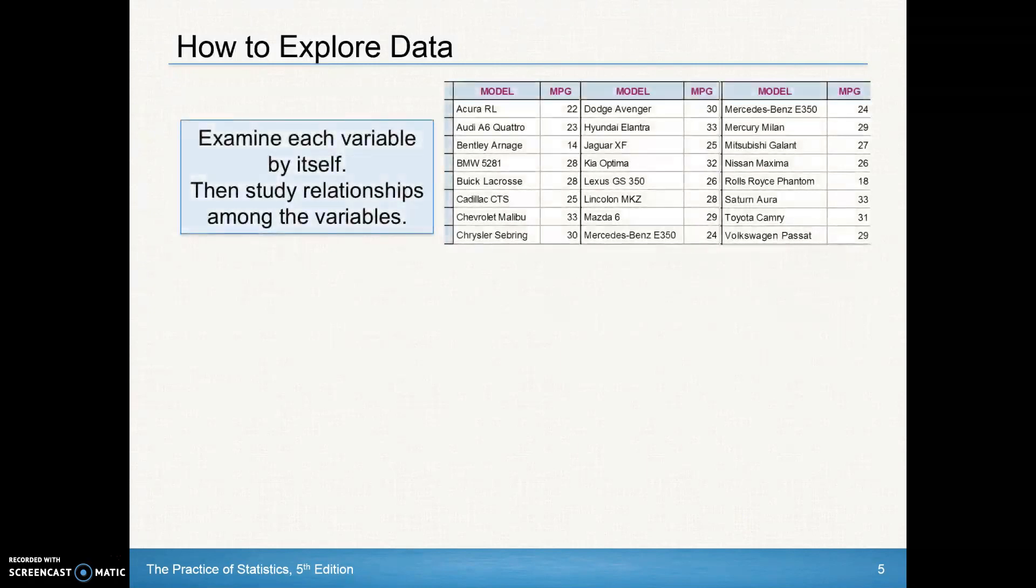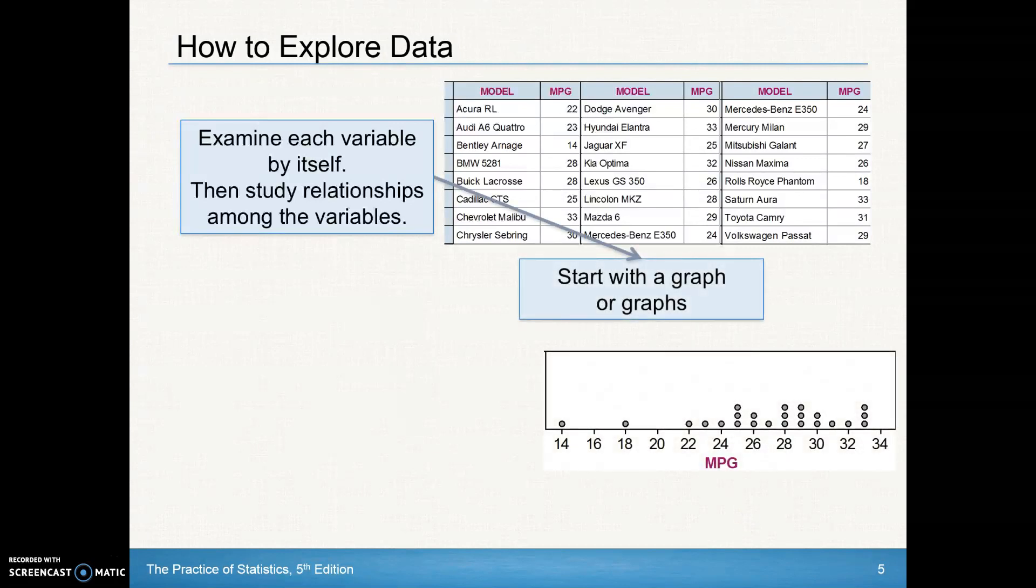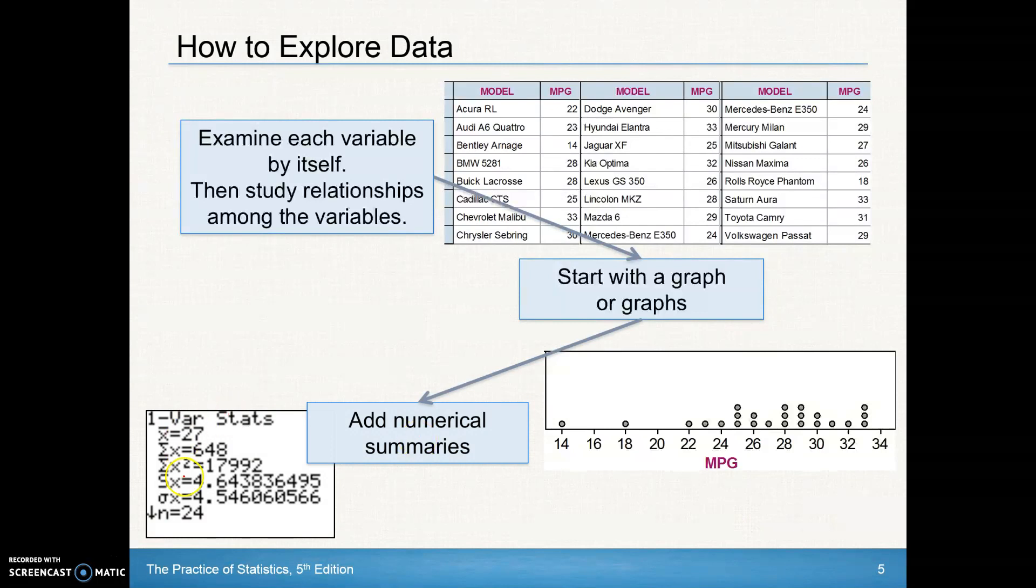How do we explore data? We examine each of the variables by itself, like we just did, and then study relationships among those variables. Always a good idea when you're gathering data is to organize that and start with a graph or several graphs. Take some numerical summaries. We'll learn how to find stuff like mean, median, standard deviation, range, IQR. But when we're exploring data, take that data, make some graphs of that data, find some numerical summaries of that data.